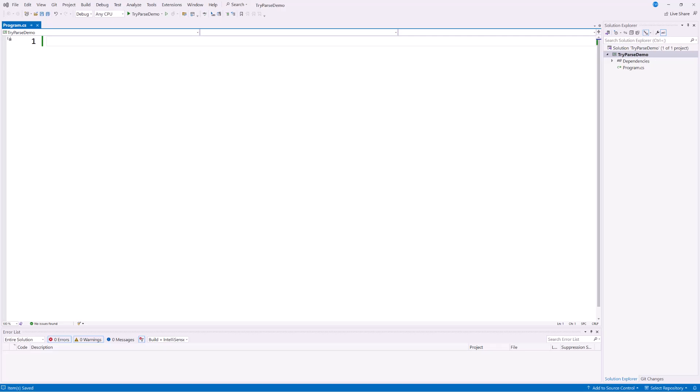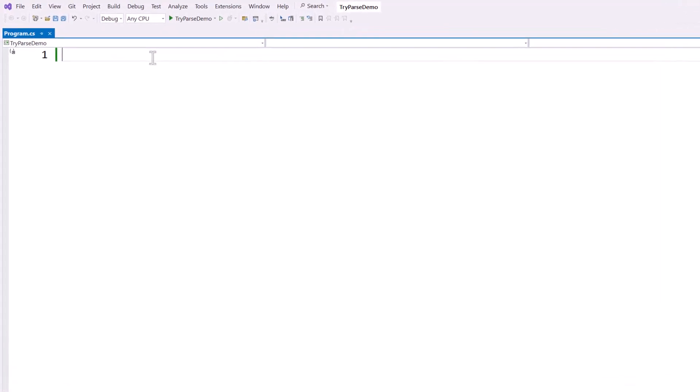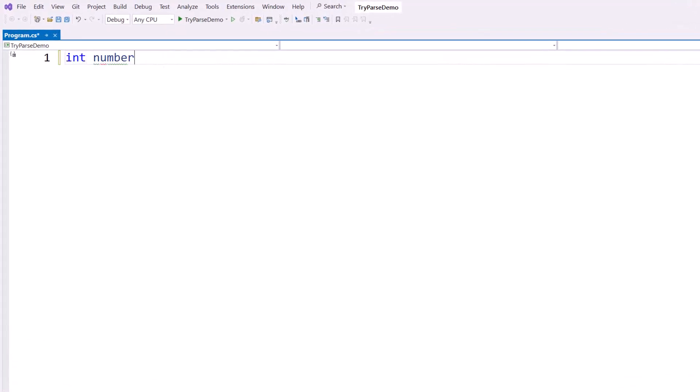And the great thing about try parse is that it does not crash your program or throw exceptions when the data is bad. But it also uses something called an output parameter, so it looks a little weird to beginners. Now I'm not going to cover output parameters at this time, but I am going to show you how to use it in the context of try parse. So let's say for a moment that we would like to get a number from user and we're going to get input from the console.